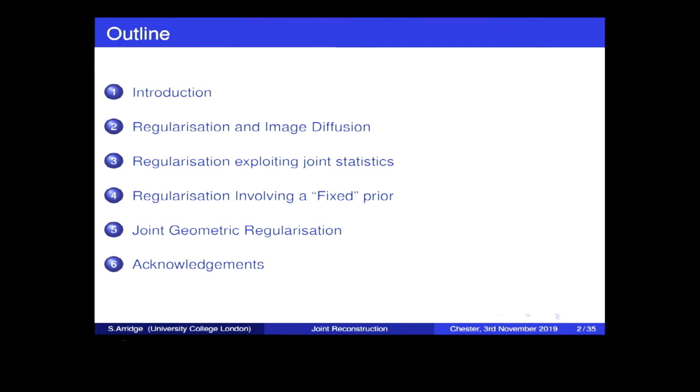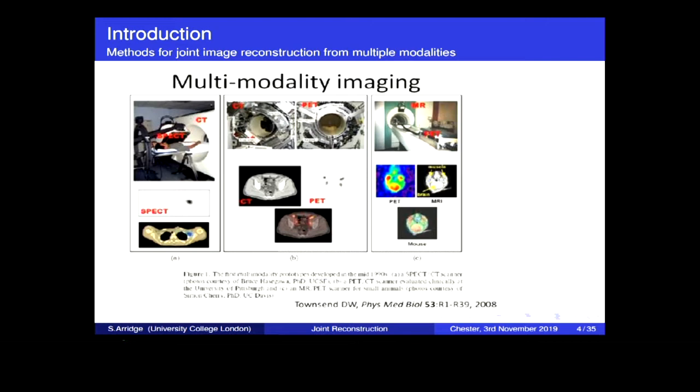I'm always wondering how to structure this, but this is roughly how I'm structuring it. We're here going to talk about medical applications. We'll mention this review from 2008 by Dave Townsend talking about multimodality imaging. SPECT and CT, PET and CT have been around a relatively long time. But in the last 10 years, there's been this development of PET MR, which has a lot of exciting opportunities because of the strongly contrasting structural and functional information.